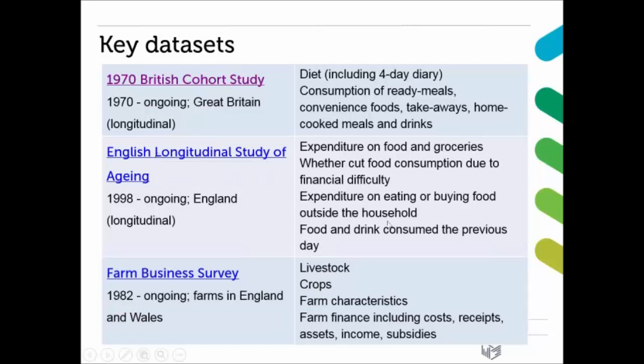The English Longitudinal Study of Aging is also a good dataset for food data. It has data on expenditure on food and groceries, whether people have to cut food consumption due to financial difficulty, information about expenditure on eating or buying food outside the household, and the food and drink consumed the previous day.